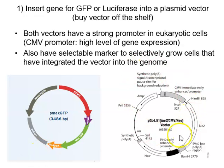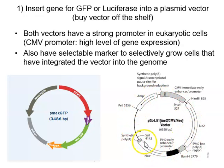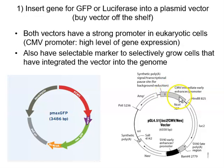For luciferase, a slightly more complicated vector is used. It has an ampicillin resistance gene for bacterial selection, a neomycin resistance gene for selection in eukaryotic cells — using neomycin or G418 antibiotic, which can kill eukaryotic cells — and a CMV promoter driving the luciferase gene, along with polyadenylation signals and other elements useful for gene expression. These are two of my favourite vectors for this type of work.